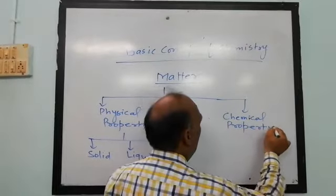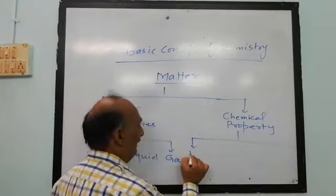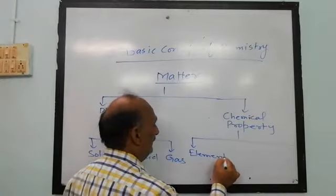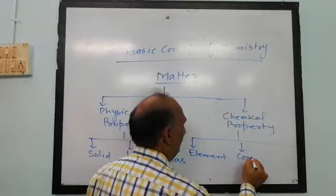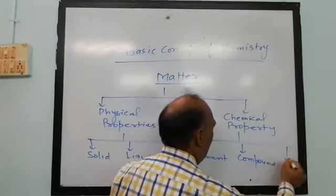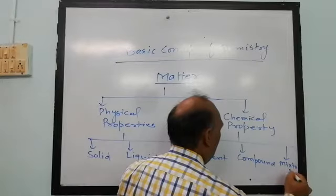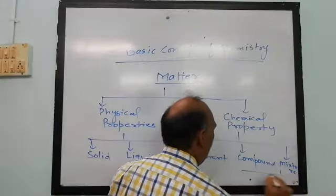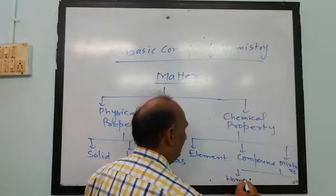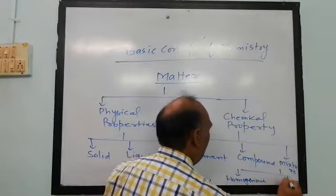On the basis of chemical property, matter is classified into element, compound, and mixture. Again, mixture is of two types: homogeneous and heterogeneous.